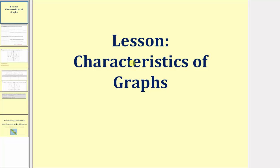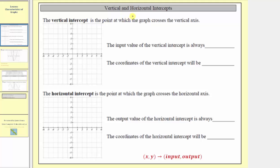Welcome to a lesson on the characteristics of graphs. Let's first discuss the vertical and horizontal intercepts of a graph. The vertical intercept is the point at which the graph crosses the vertical axis, which is this axis here, sometimes referred to as the y-axis. So the point on this axis where the graph crosses or intersects is the vertical intercept.